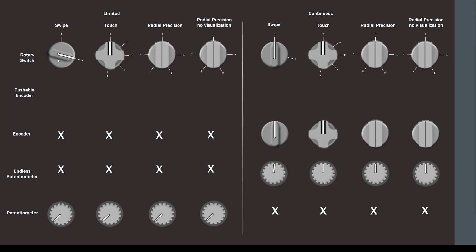On the left side of this center line, we have limited controls. These are controls that have an endpoint. On the right, we have continuous controls, which means that if you keep turning them, they just keep going round and round.